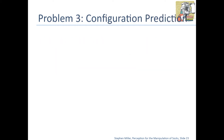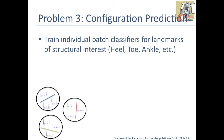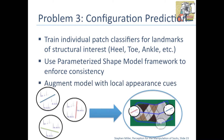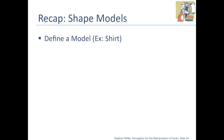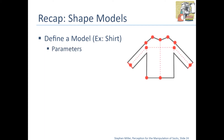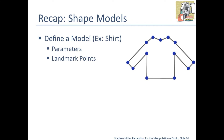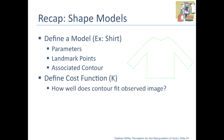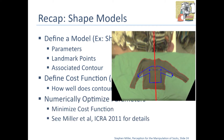When we predict the configuration of the sock, we train individual patch classifiers for various landmarks — a heel classifier, a toe classifier, an ankle classifier — and use the shape model framework to enforce overall consistency. We augment the contour-only model with local appearance cues. The shape model defines a set of parameters and landmark points giving structure, plus a contour the model would trace in that configuration. We define a cost function measuring how well the contour fits the observed image, and numerically optimize the parameters.